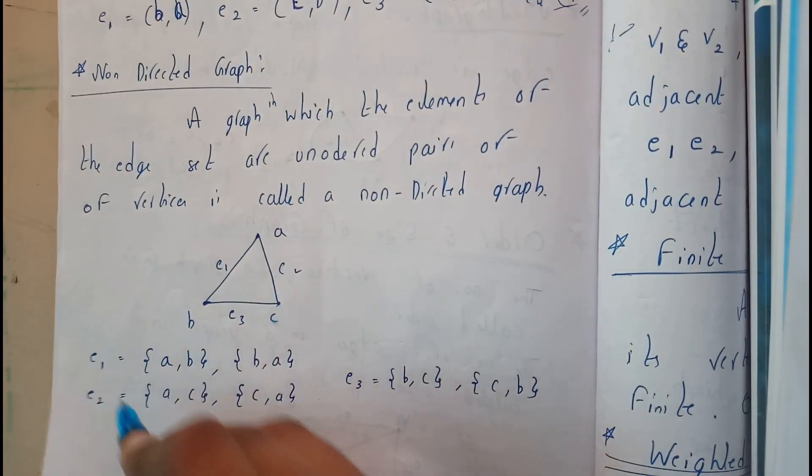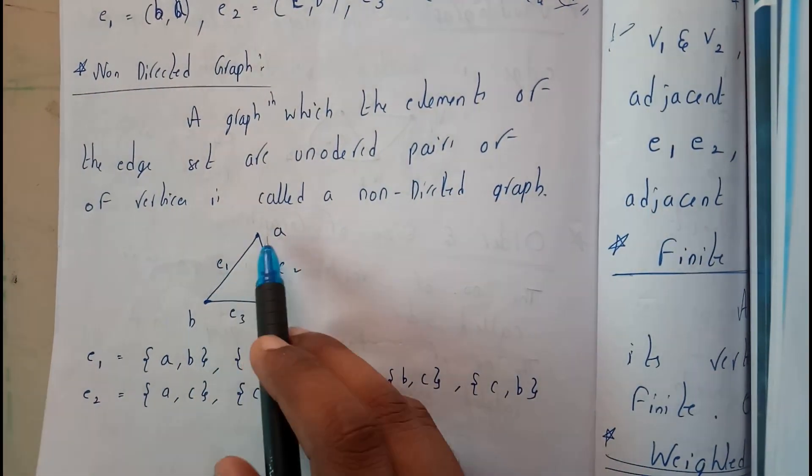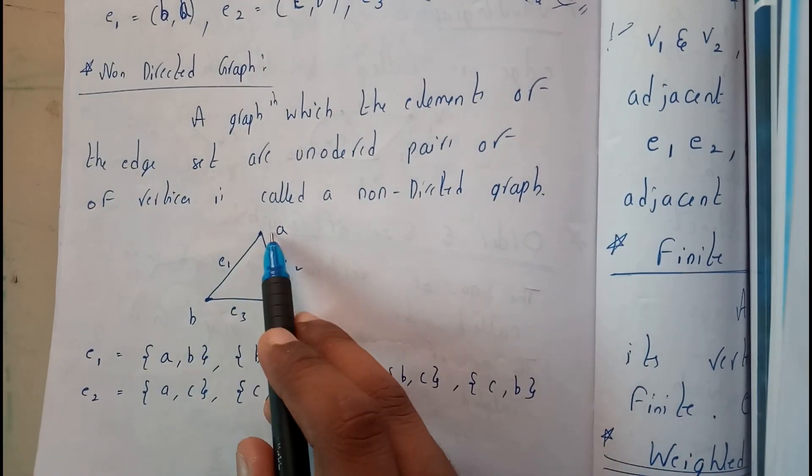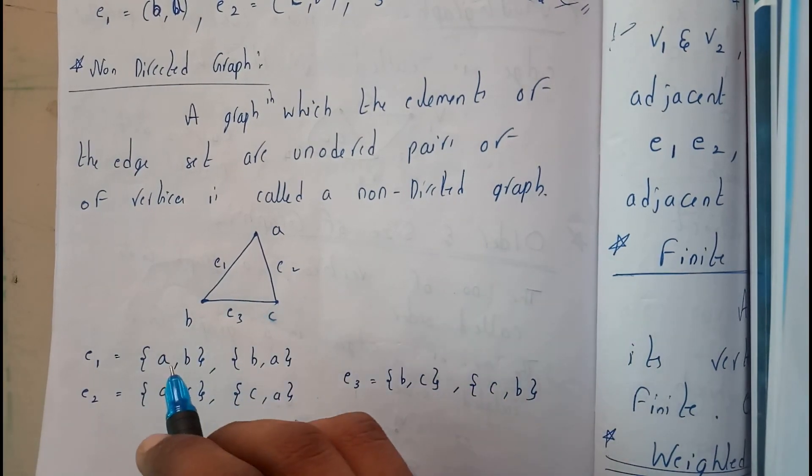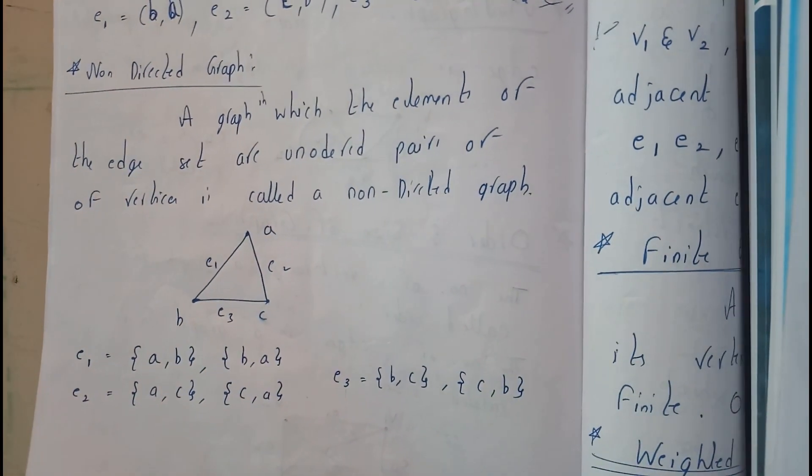When we will be considering E1 as an edge, it is in between A to B or B to A. It is bi-directional, it is in both directions. So it has no particular direction, so it is called a non-directed graph.